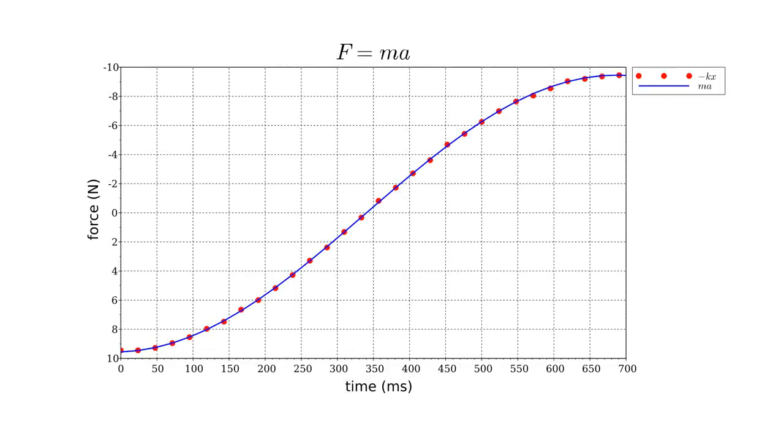When we look at our plots of position versus time, we see that, indeed, one-half period of the sinusoidal oscillation corresponds to something close to 690 milliseconds.